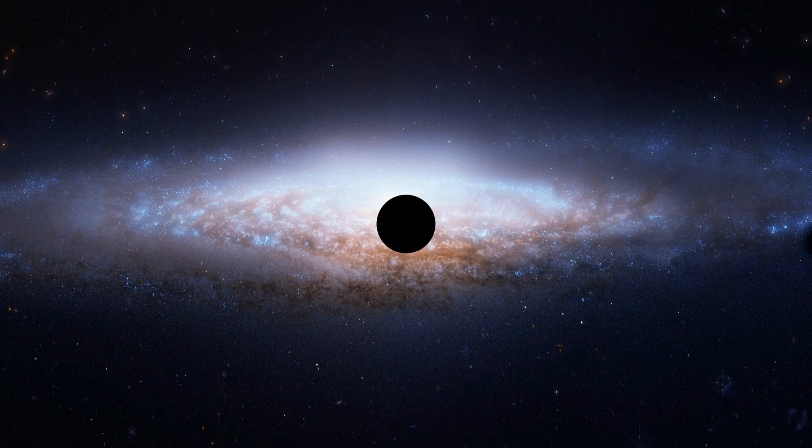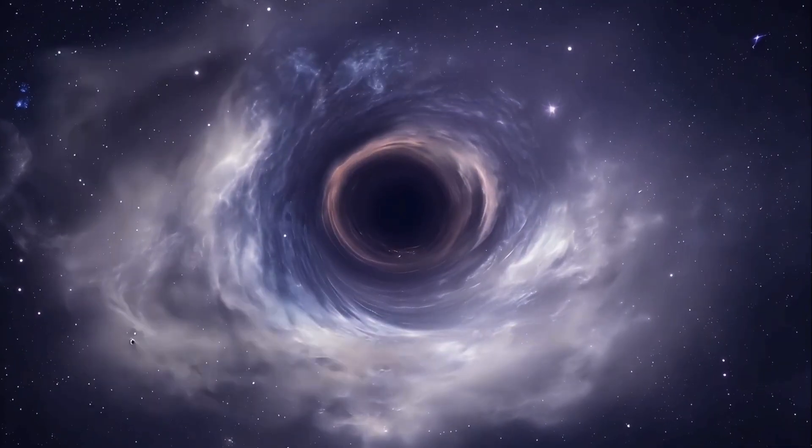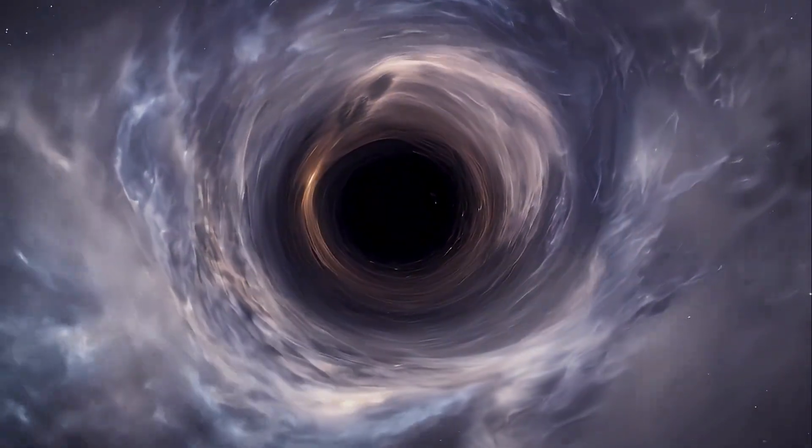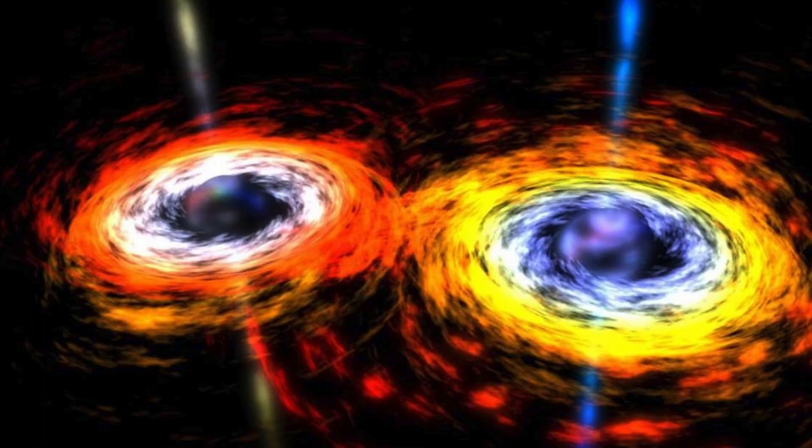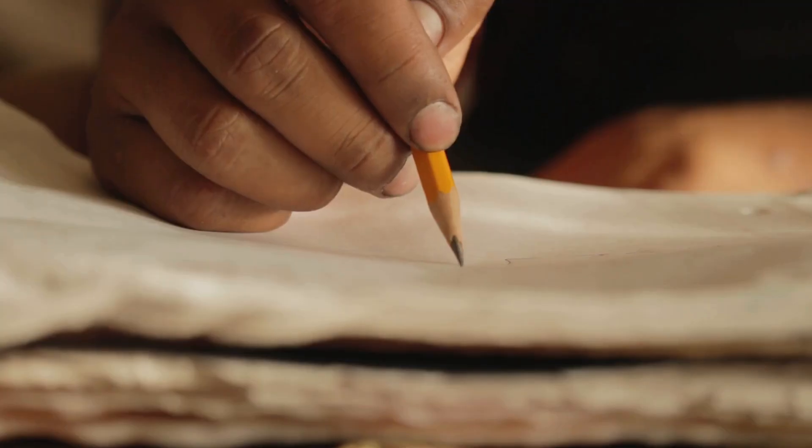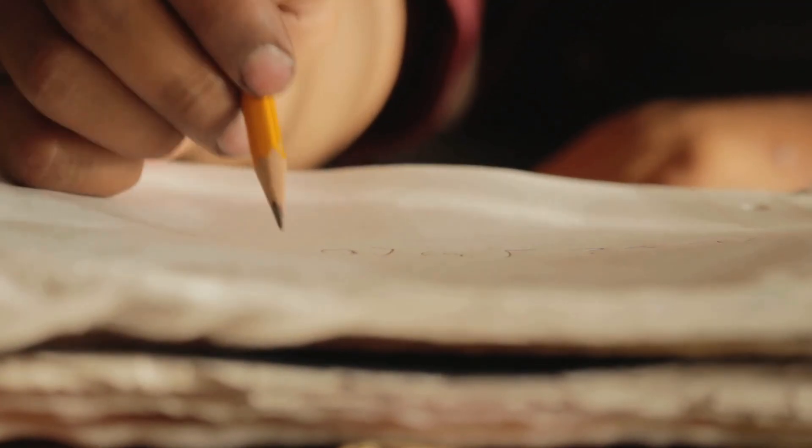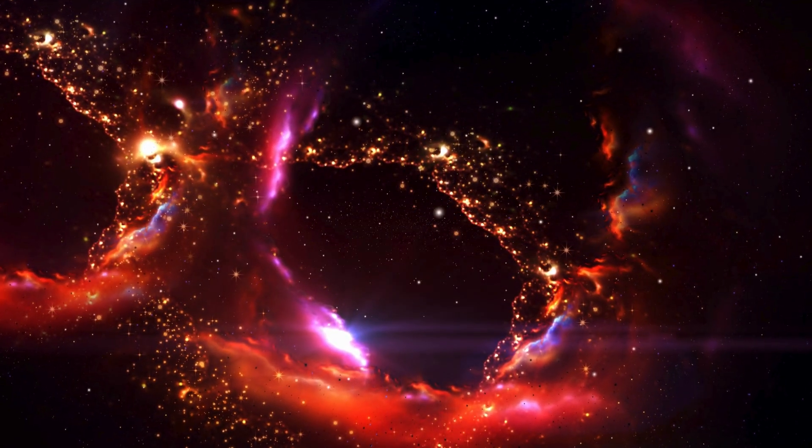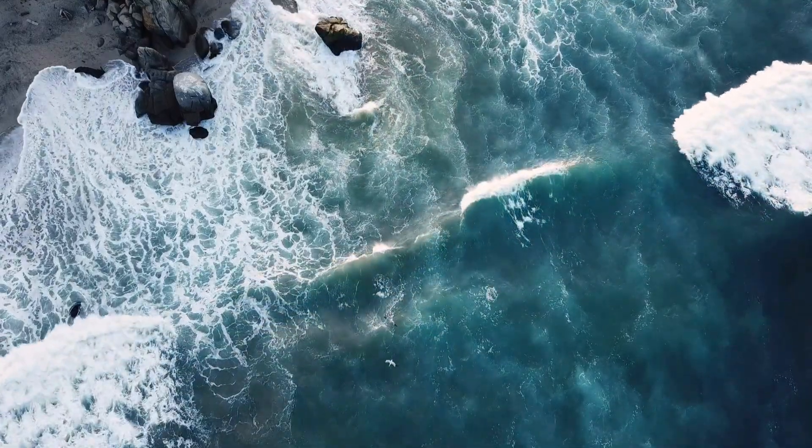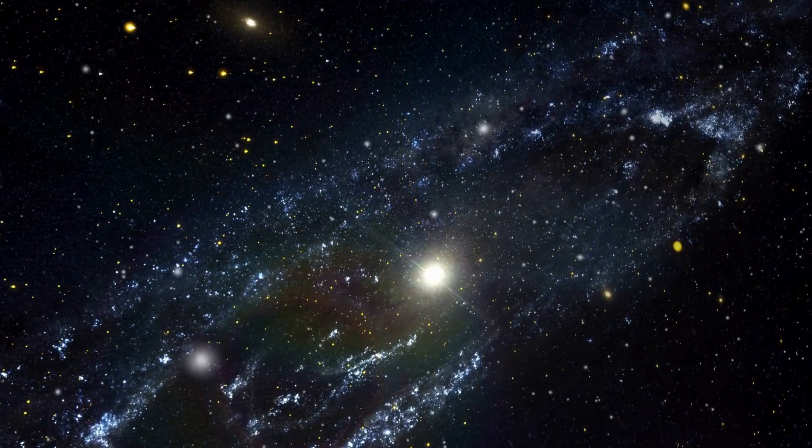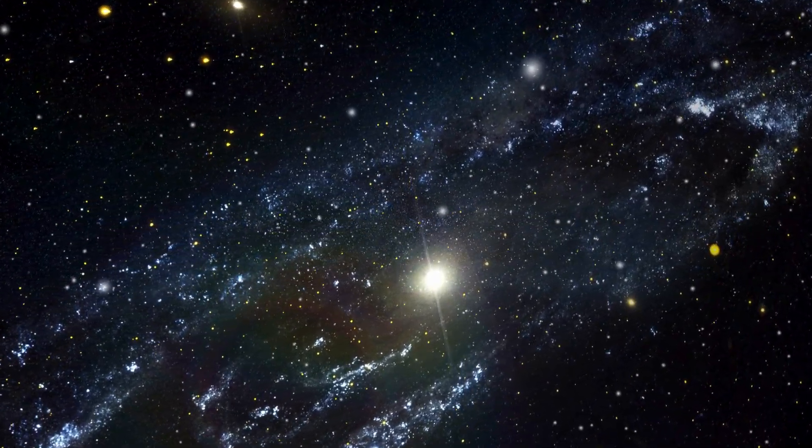Gravitational waves are another window into black holes. In 2015, LIGO detected ripples in space-time from two black holes merging, confirming Einstein's predictions. Since then, LIGO, Virgo, and KAGRA have recorded dozens of mergers. In 2025, a study in Physical Review Letters reported an asymmetric merger between black holes of 80 and 10 solar masses, hinting at complex origins. These waves let us hear events from billions of years ago, offering a direct glimpse into the universe's violent past.